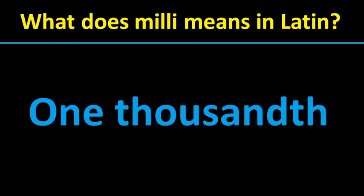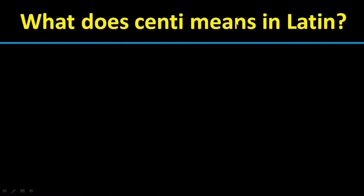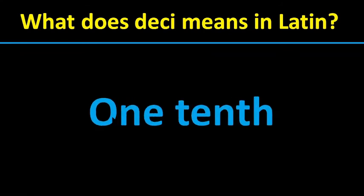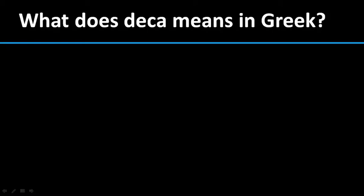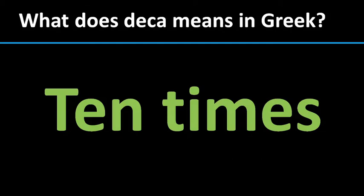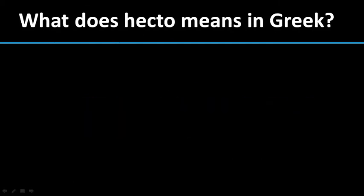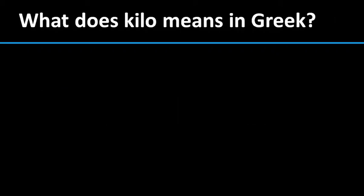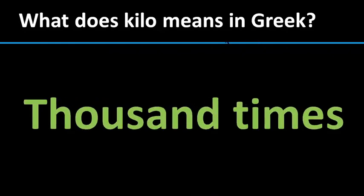What does milli mean in Latin? Milli means one thousandth. What does centi mean? Centi means one hundredth in Latin. What does deci mean in Latin? Deci means one tenth — that is, one out of ten. What does deca mean in Greek? Deca means ten times. What does hecto mean in Greek? Hecto means one hundred times. What does kilo mean in Greek? Kilo means one thousand times.